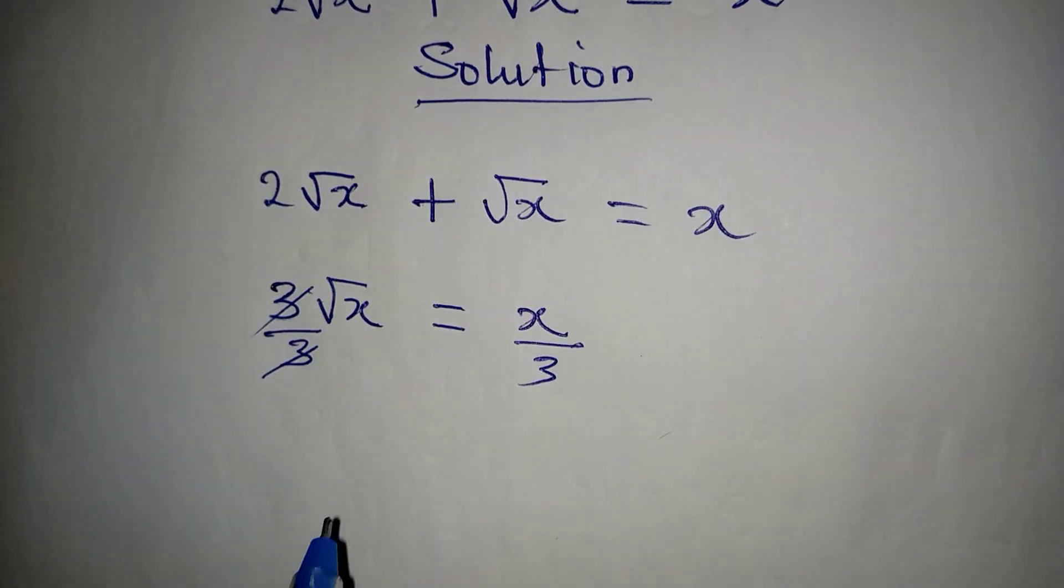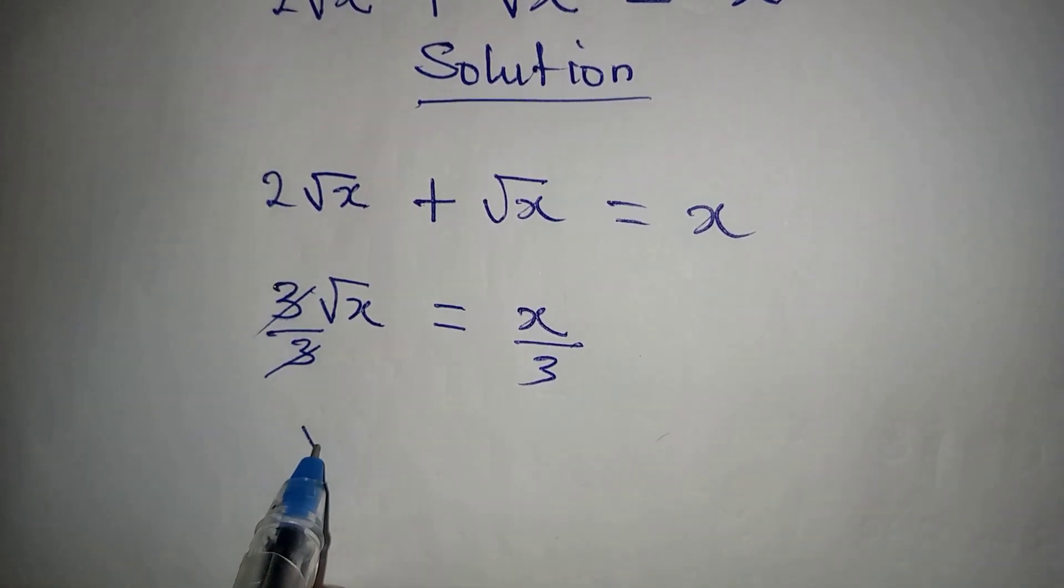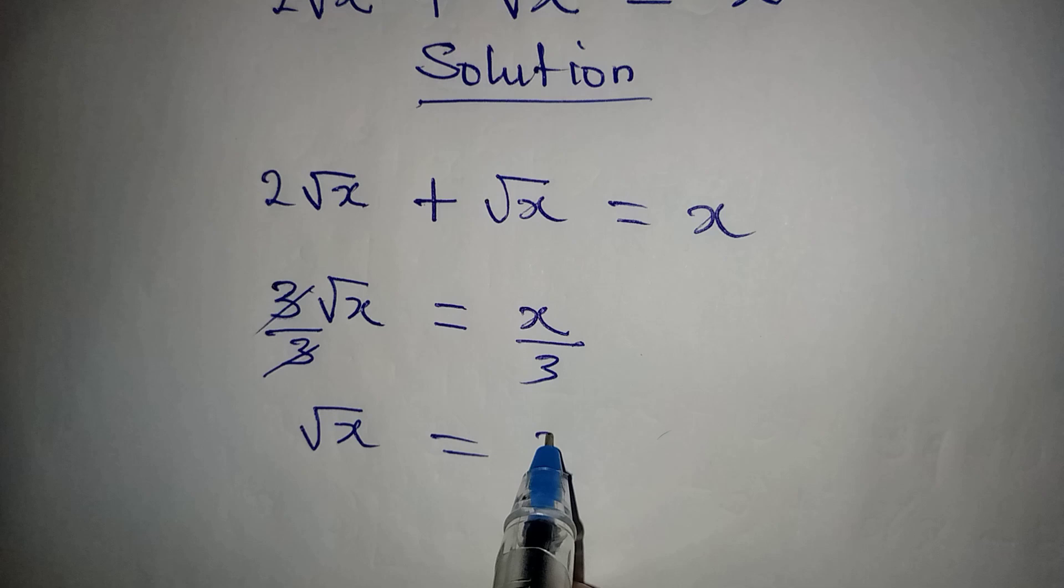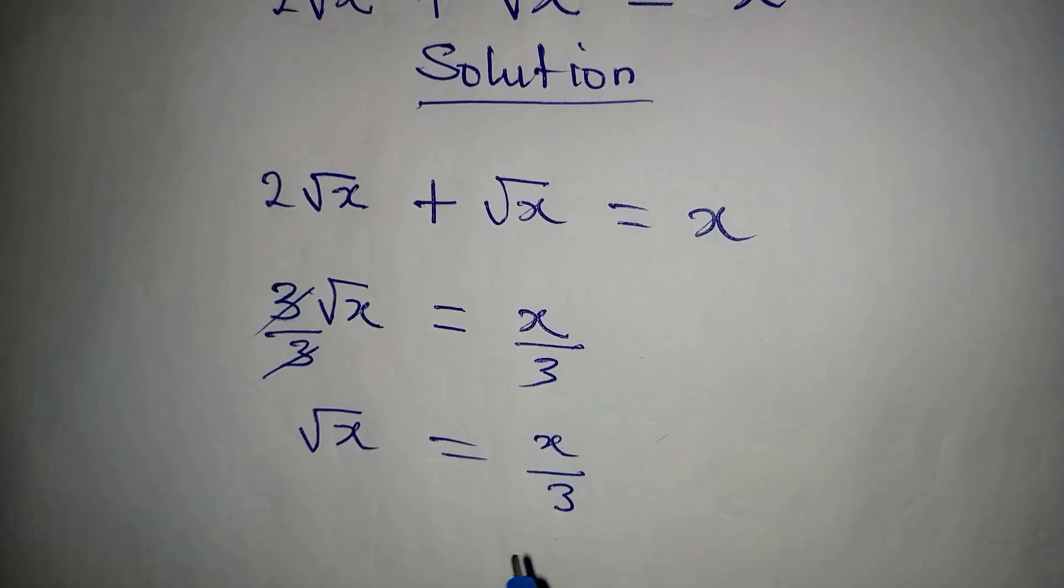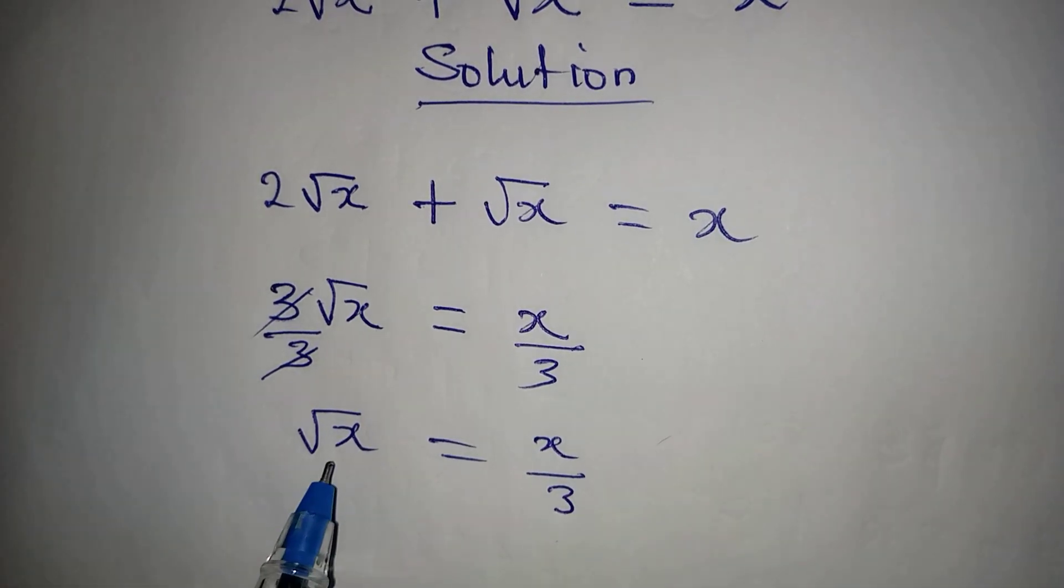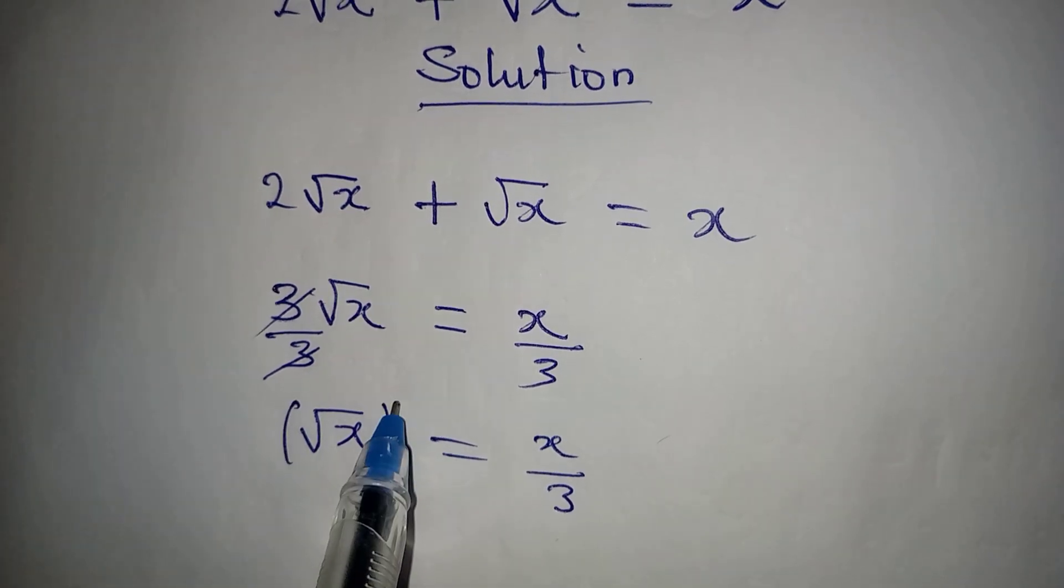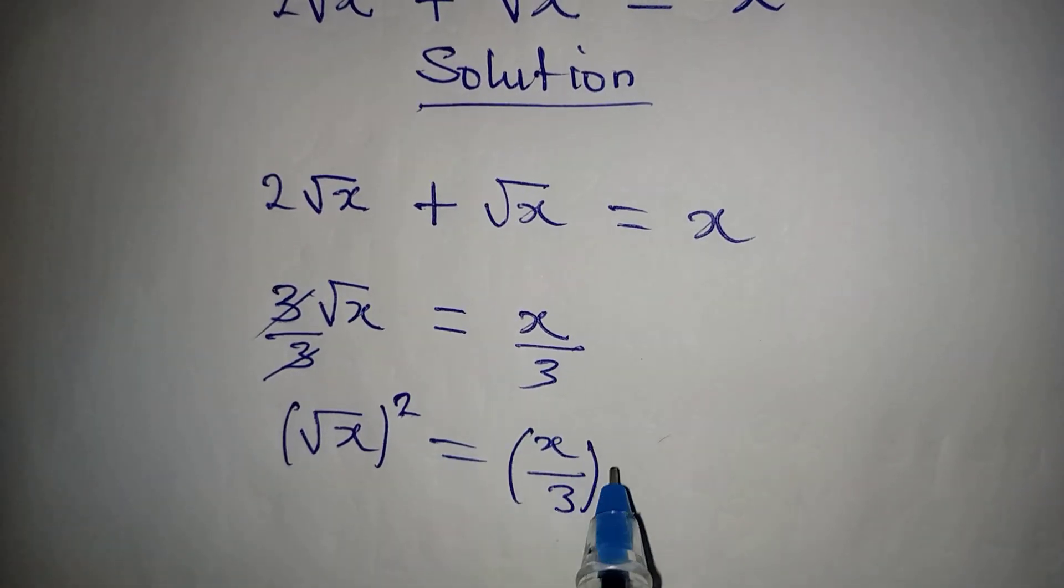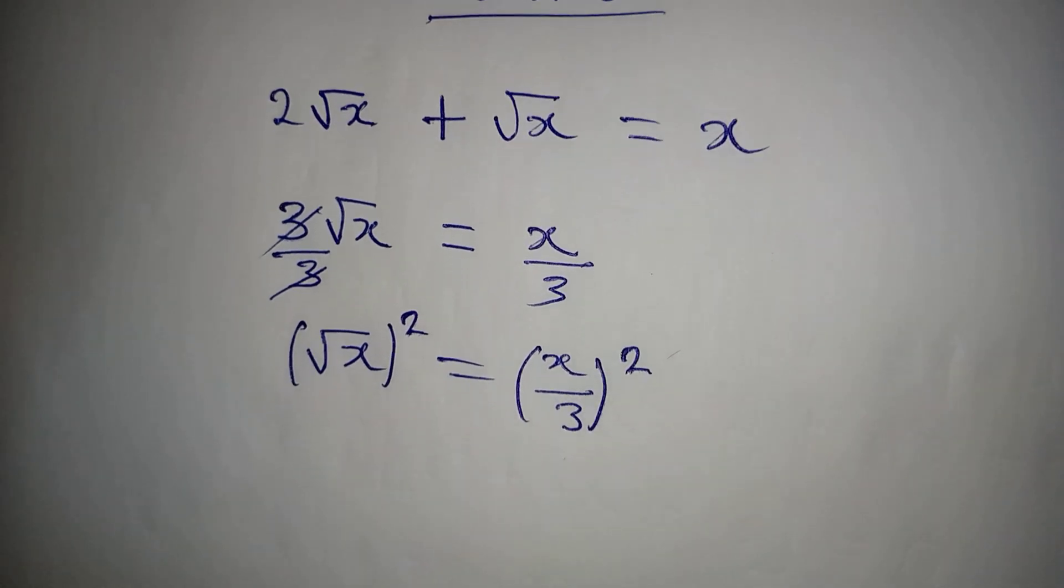And now √x is equal to x over 3. To do away with this square root, we are going to square whatever we have. We'll square this as well.